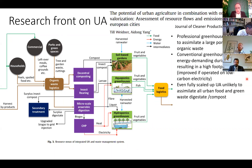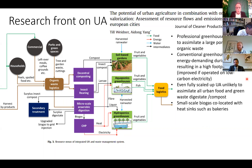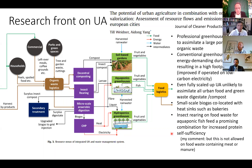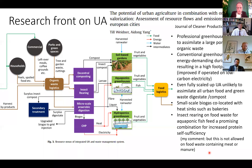They came to some interesting conclusions: professional greenhouses are necessary to assimilate a large portion of organic waste. Conventional greenhouses are very energy demanding during winter, resulting in a high footprint — but this can be improved if operated on a low-carbon electricity grid such as solar or hydro. Even fully scaled-up urban agriculture is unlikely to assimilate all urban food and green waste digestate or compost. Small-scale biogas should be co-located with heat sinks such as bakeries. Insect rearing on food waste was found to be a very efficient way to produce aquaponic fish feed — a promising combination for increased protein self-sufficiency, though there is a challenge from legislation.